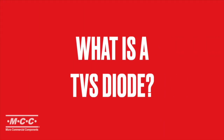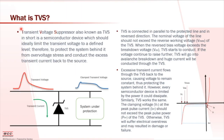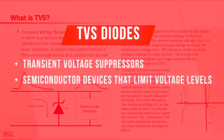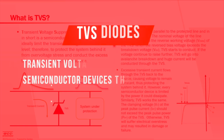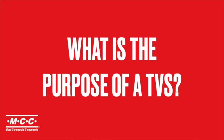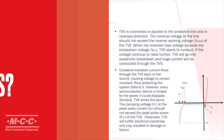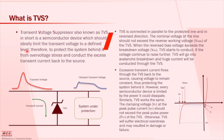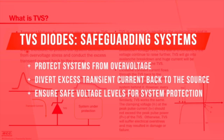What is a TVS diode? TVS is short for transient voltage suppressors. It is a semiconductor device which limits the transient voltage to a defined or certain voltage level. The purpose of a TVS diode is to protect the systems behind it from overvoltage stress and conduct the excess transient current back to the source.